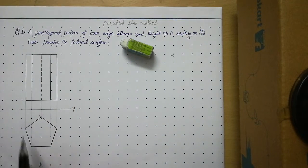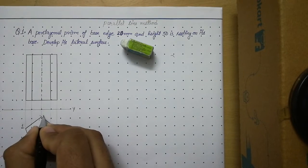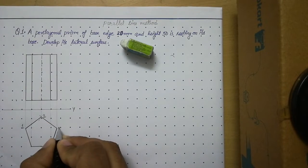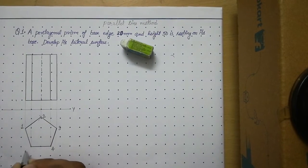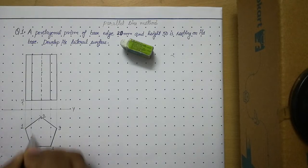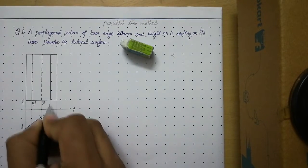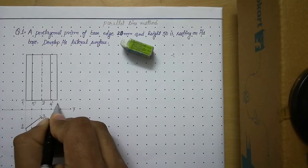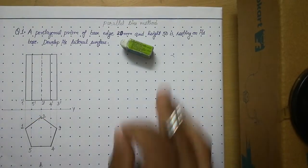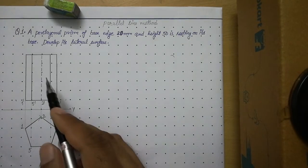Now label the edges starting in clockwise direction: edge 1, 2, 3, 4, 5 outside the pentagon at the bottom. So edge 1, edge 5, edge 2, edge 4, and edge 3. In the case of a cylinder we calculated circumference, but for a pentagonal prism we calculate the perimeter.